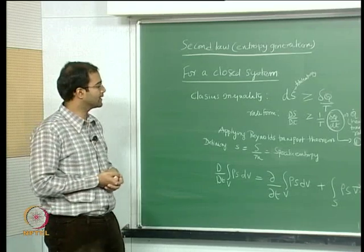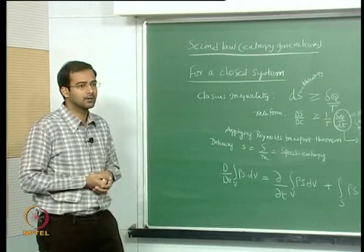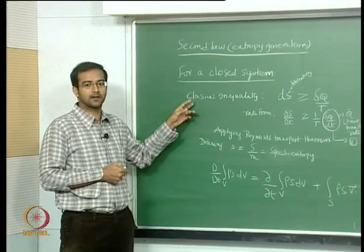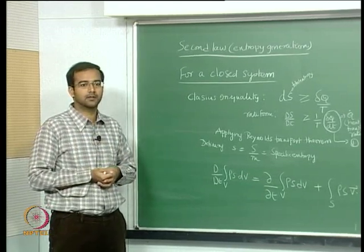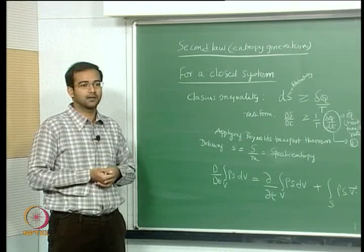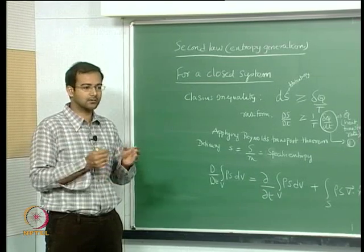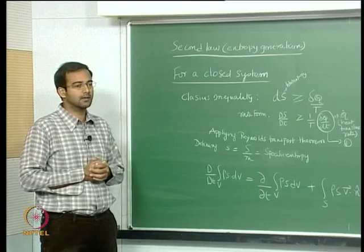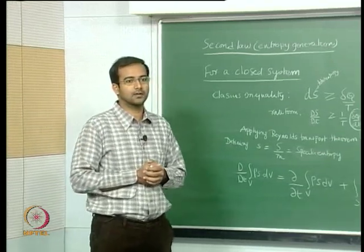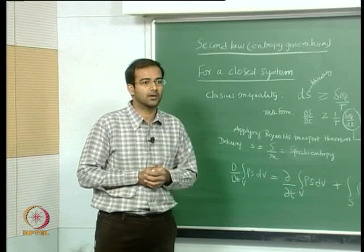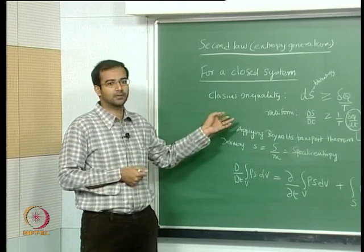After looking at the first law, it is also very important to look at the second law. Most of the time we stop with the first law without much attention to the second law. But if you look at any practical heat exchanger device, entropy generation is very important — there are a lot of irreversibilities within the system. We have to quantify these irreversibilities and identify their sources. That is where we apply the second law and derive conservation of entropy.